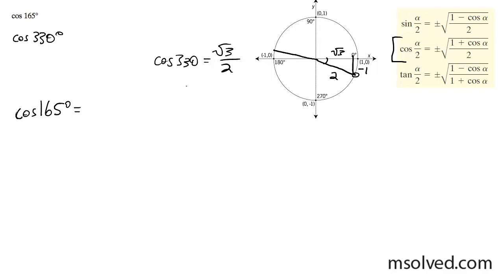165 degrees, just 15 degrees short of 180. So it's going to be negative square root of 1 plus root 3 over 2, divided by 2. And then I'm going to get negative square root 1. I'm going to get a common denominator, 2 plus root 3, divided by 2.